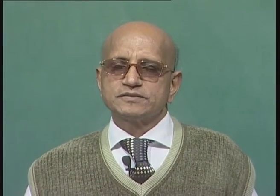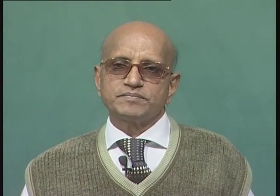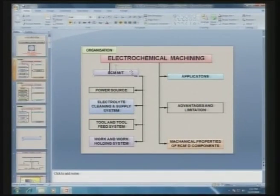In the last lecture, I discussed the basic principle of electrochemical machining, which is based on Faraday's laws of electrolysis. We discussed two basic laws, based on which we can calculate the amount of material removed for the given current, chemical equivalent of the anode material and machining time. I also discussed the ECM machine tool, power source, and the electrolyte cleaning and supply system.